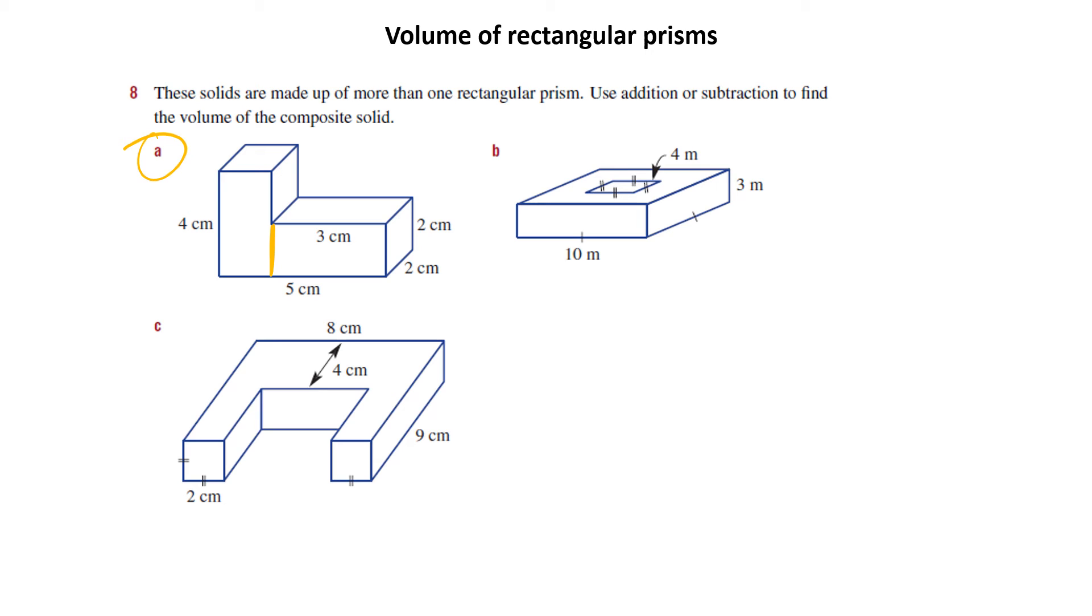But if I look at that, I can see that if this is three here, my total is five. That means that has to be two up there. If this is two, this is also going to be two. So those are the two shapes I've got to look at. In this case, I'm adding the volume of these two shapes together. So let's break it up and go volume one and volume two.